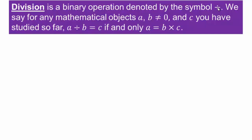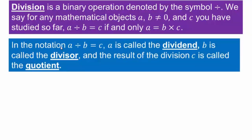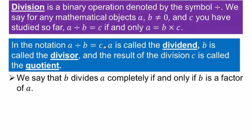Division is defined as: for any three mathematical objects a, b, and c, where b is not zero, a divided by b equals c if and only if a is the product of b and c. In this notation, a is called the dividend, b is called the divisor, and the result c is called the quotient.